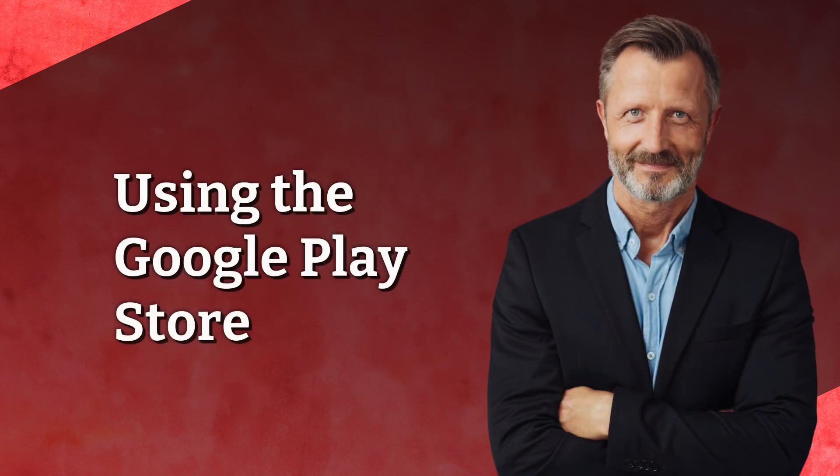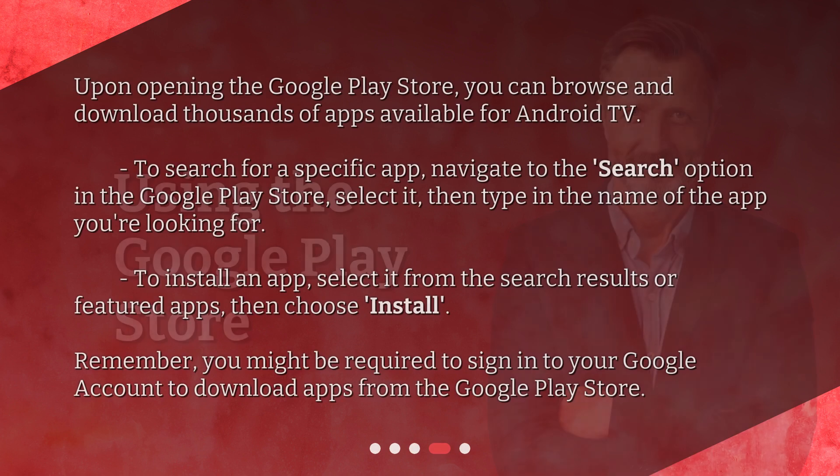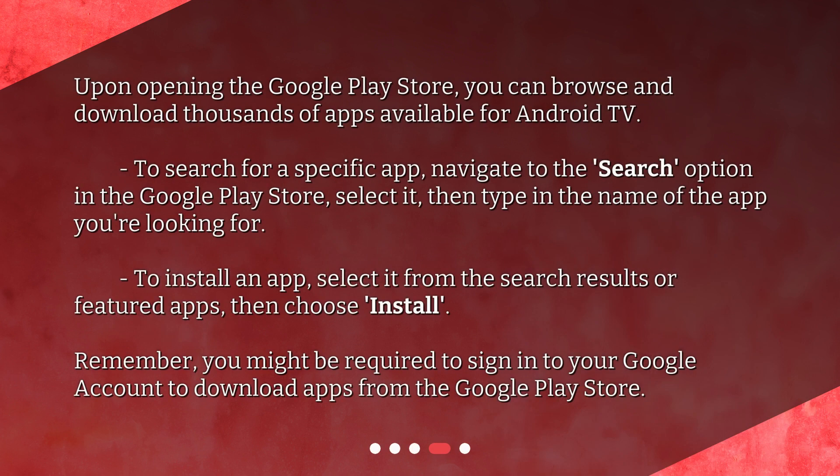Using the Google Play Store. Upon opening the Google Play Store, you can browse and download thousands of apps available for Android TV. To search for a specific app, navigate to the Search option in the Google Play Store, select it, then type in the name of the app you're looking for. To install an app, select it from the search results or featured apps, then choose Install. Remember, you might be required to sign in to your Google account to download apps from the Google Play Store.